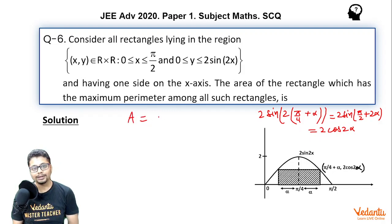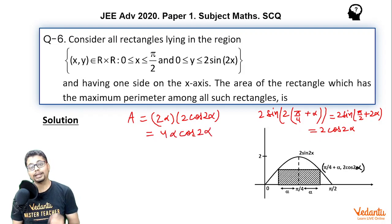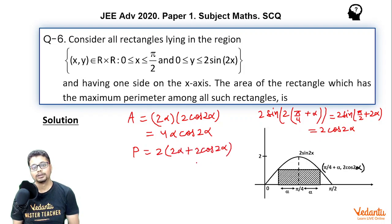We want area which would be length into breadth which essentially is 4α cos(2α). And we want area of that rectangle which has the maximum perimeter. What about perimeter? It will be 2 times length plus breadth. So this essentially becomes 4 times (α + cos(2α)).